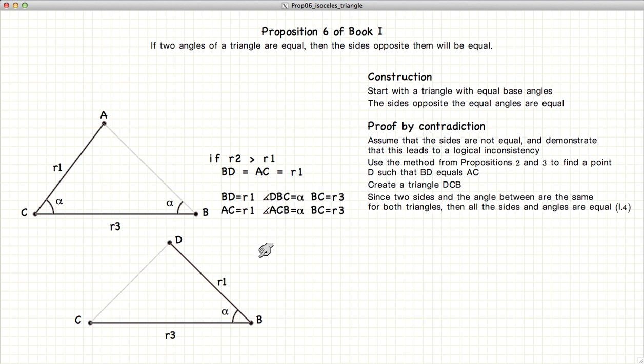according to Proposition 4, if that's the case, then these two triangles are equal. And this angle opposite of R1 will be also equal to alpha. So these two triangles are now equal.